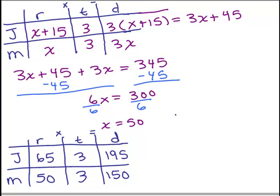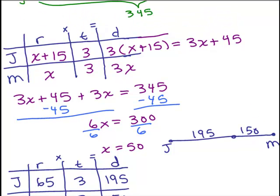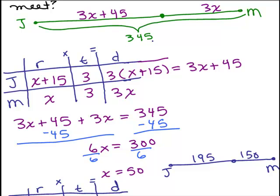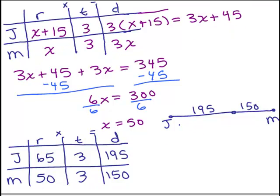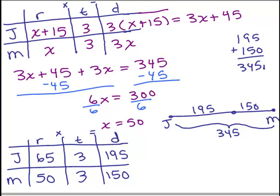Let's see if that makes sense with our picture we had. We had John and Maria, and we're now saying John actually went 195 miles and she went 150 miles. And what did we know at the beginning? How far apart were they? They were 345 miles apart. Okay, does that make sense? With this scenario, does that mean that they were 345 miles apart? Is 195 plus 150, does that add up to 345? And yes, it does.